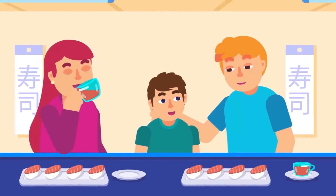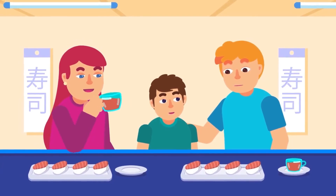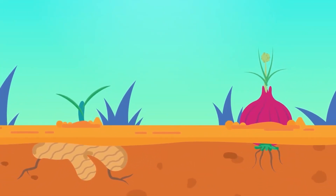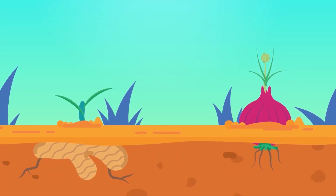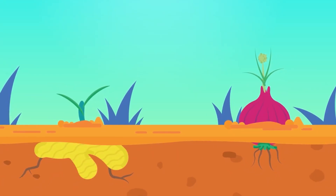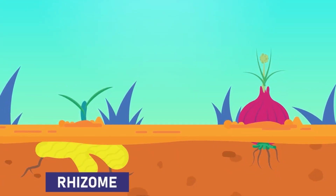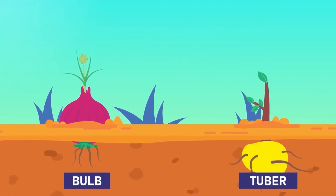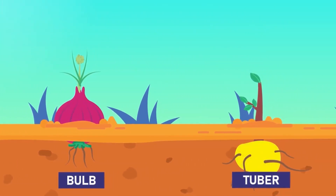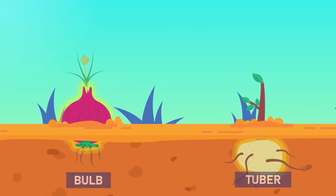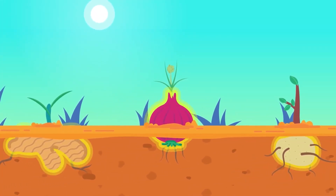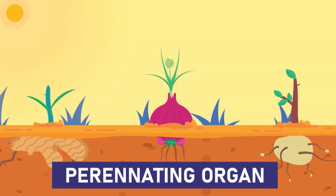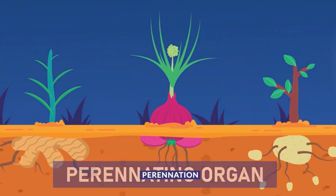Ginger is one example of a plant that reproduces asexually, and so are onions. Many flowering plants reproduce vegetatively by means of underground storage organs, such as ginger and onions. Gingers come under a broader category of rhizomes, and onions under bulbs. Tubers, like potatoes, are also a way of plants to reproduce asexually. These underground storage organs are also called perennating organs because they help plants survive year to year, a process called perennation.